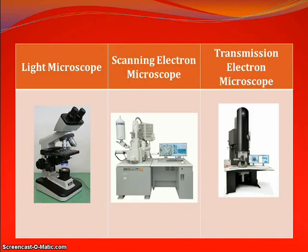Here are images of a light microscope, scanning electron microscope, and transmission electron microscope, so you can see how much more powerful electron microscopes are than the light microscope. The light microscope can sit on a table — those are the ones we use in lab — but scanning and transmission electron microscopes take up nearly an entire room and are very powerful, allowing us to see things on a much, much smaller level.